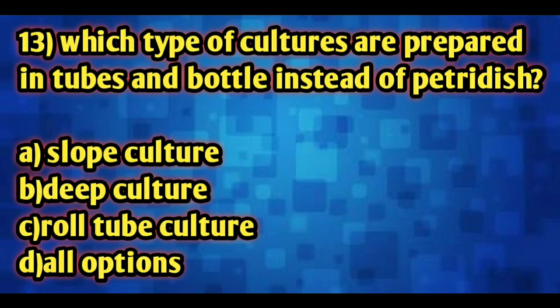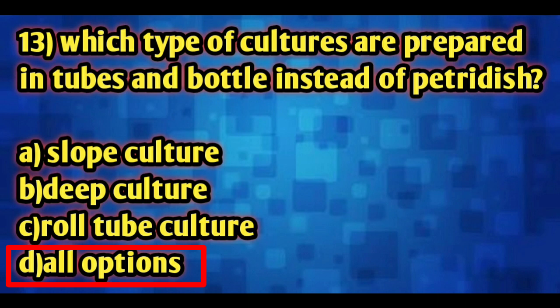Question number 13: which types of cultures are prepared in tubes and bottles instead of petri dishes? The options are: slope culture, deep culture, roll tube culture, and all of the above. The right answer is Option D — all options. Slope culture, deep culture, and roll tube culture are all prepared in tubes and bottles.